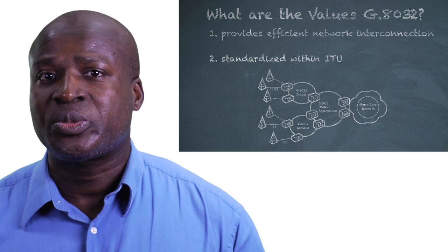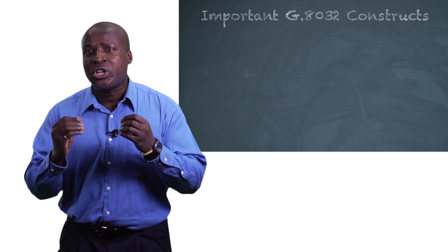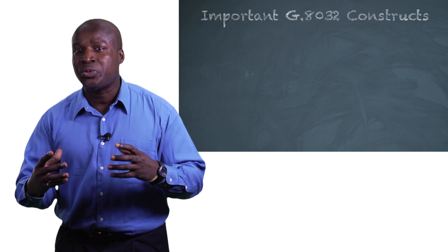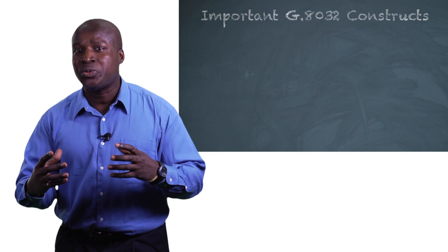I'd like to share with you some of the important G8032 constructs that are used within a network. There are two primary constructs. One is a ring, which is really just a closed loop.